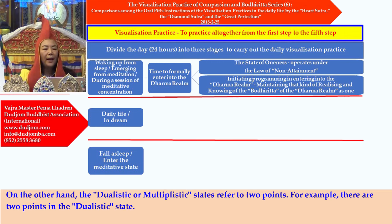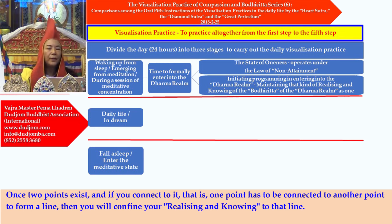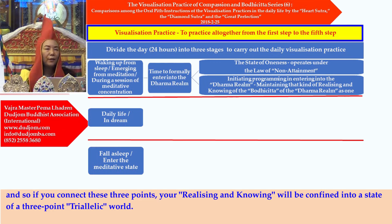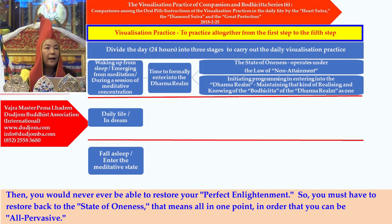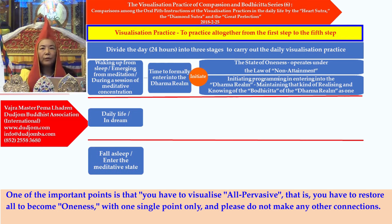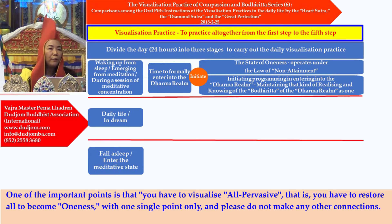The dualistic or multiplistic states refer to two or more points. Once two points exist and you connect them, you confine your realizing and knowing to that line. If there are three points — the world we exist in now is in a trialectic world with three points — three points can form a space, and if you connect these three points, your realizing and knowing will be confined into a three-point world, and you would never be able to restore your perfect enlightenment. So you must restore back to the state of oneness — all-in-one point — in order to be all-pervasive. This is saying that if we want to formally enter into the Dharma realm, please remember to initiate the programming that we have taught you.